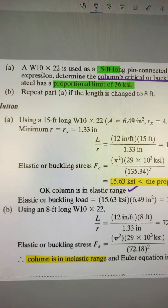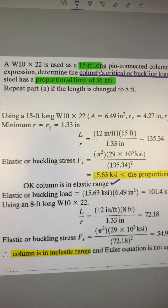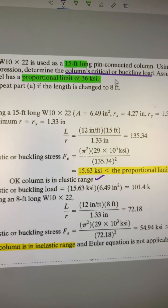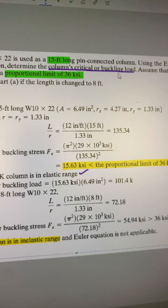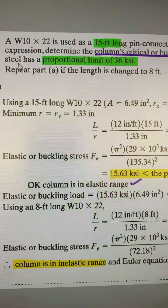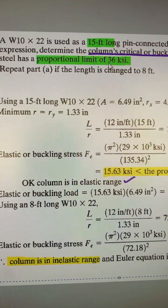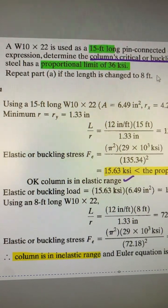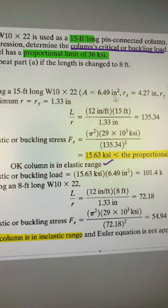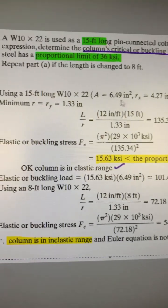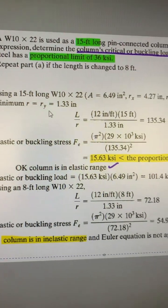Let us consider column W10 by 22 with 15 feet long pin connected column. We will find out the critical column's critical or buckling load. We will assume that steel has a proportional limit of 36 ksi. Second, we will use for 8 feet length.